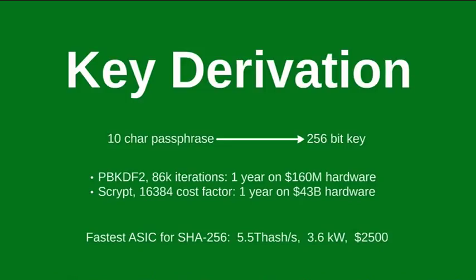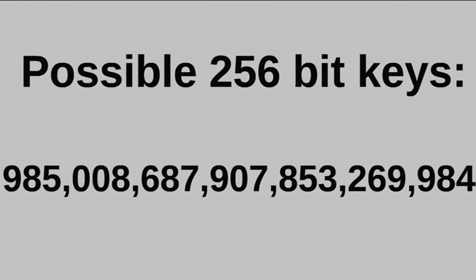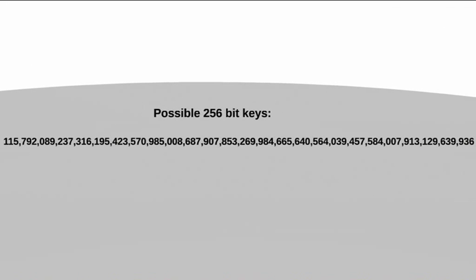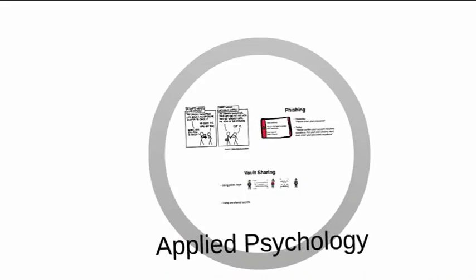What if we bypass key derivation and directly guess the 256-bit key? Not a good idea. This is not a number of 256-bit keys — this is about one sextillion, the approximate number of sand grains on Earth. Let's zoom out: this is the number of possible 256-bit keys. Adding just three more digits, we reach 10 to the power of 80 — the approximate number of atoms in our universe. So we are talking about a system which is practically uncrackable by direct key guessing.